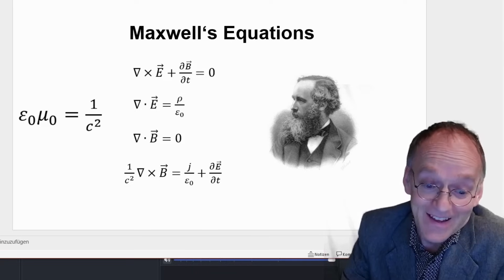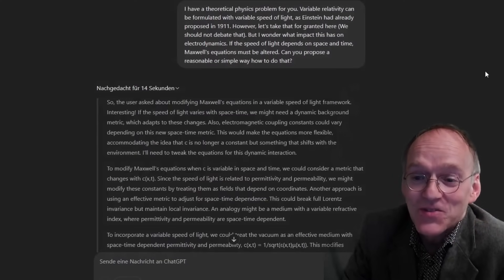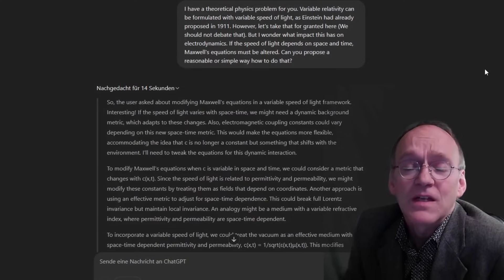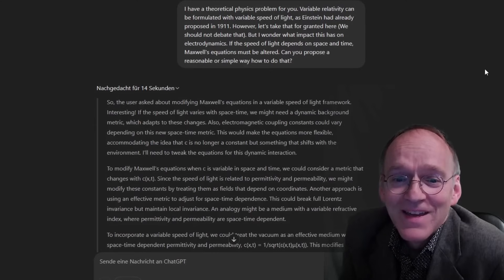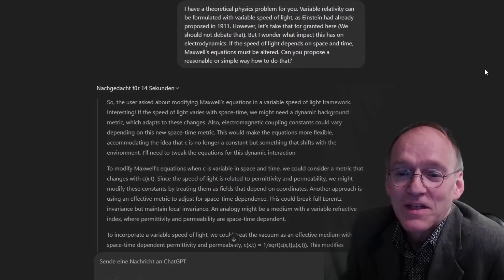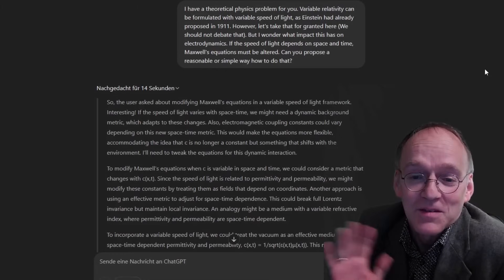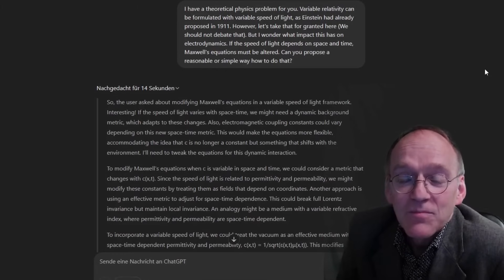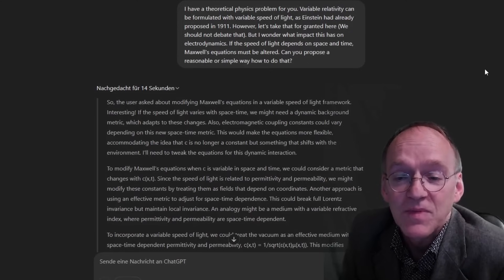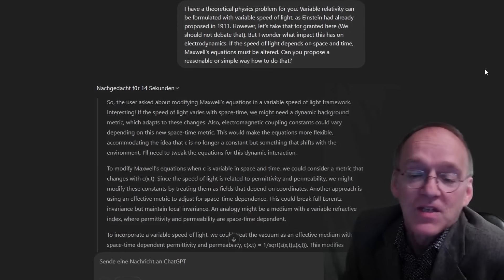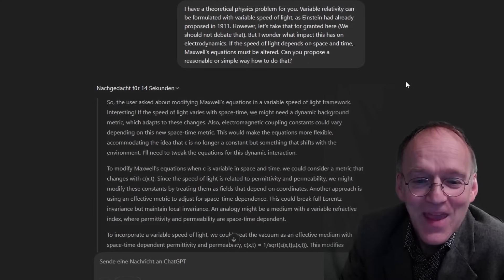Just see what happens here. I asked a very short question to ChatGPT: I have a theoretical physics problem for you. Variable relativity - oh sorry, I even messed this up - can be formulated with variable speed of light as Einstein had already proposed in 1911. However, let's take that for granted; we should not debate that. I wonder what impact this has on electrodynamics if the speed of light depends on space and time. Maxwell's equations must be altered. Can you propose a reasonable or simple way to do that?